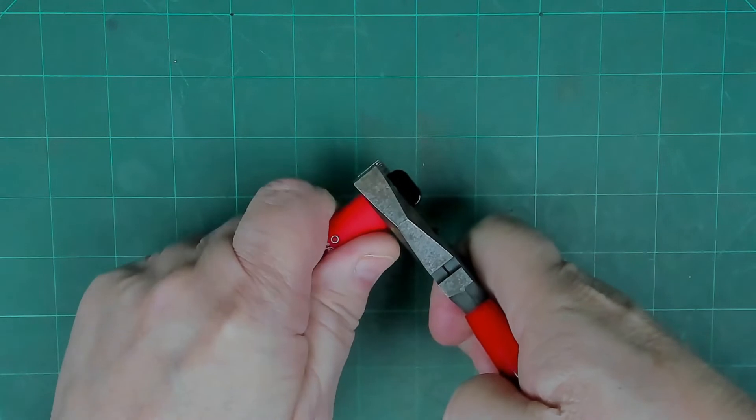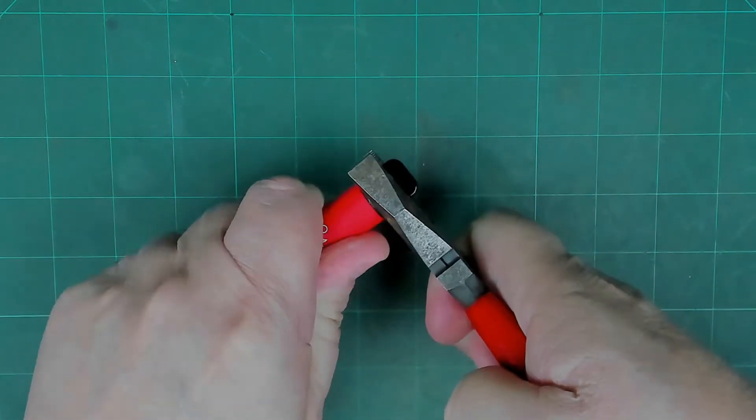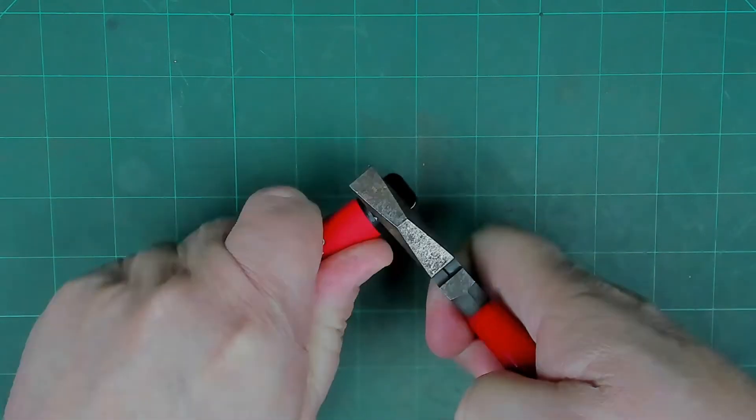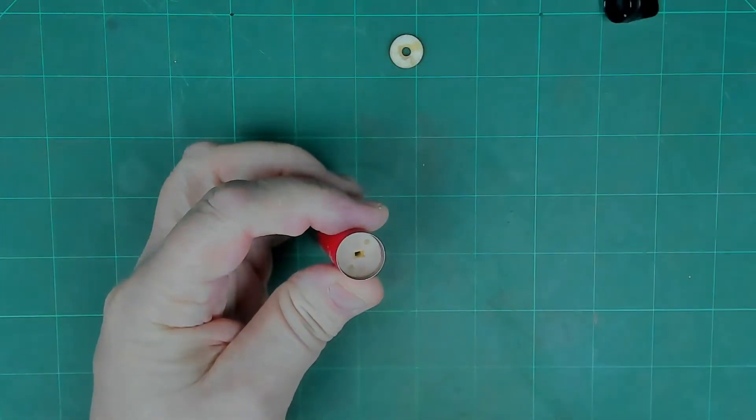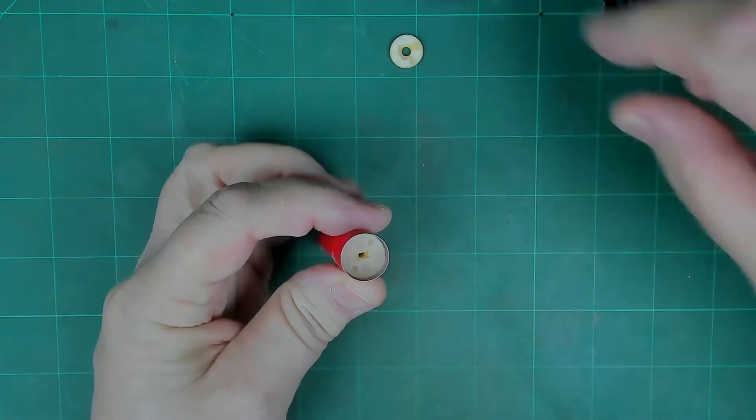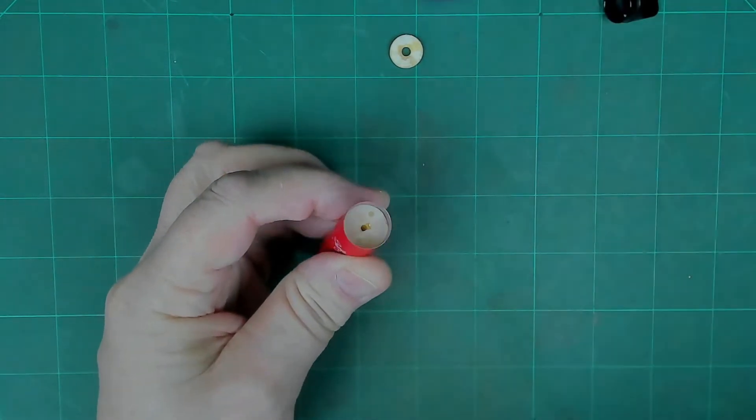Just grab hold of it with a nice pair of pliers, twist and pull, and that should come out. Inside there are various little bits of plastic which we will pull out and get rid of.